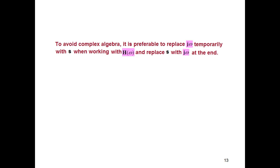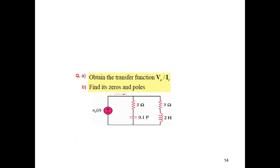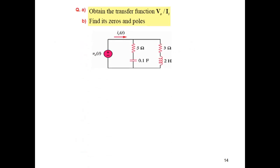From now onward, to simplify, we'll just replace jω with s, so we don't have to write j all the time. This is another technique for further simplification. Let's do another example.